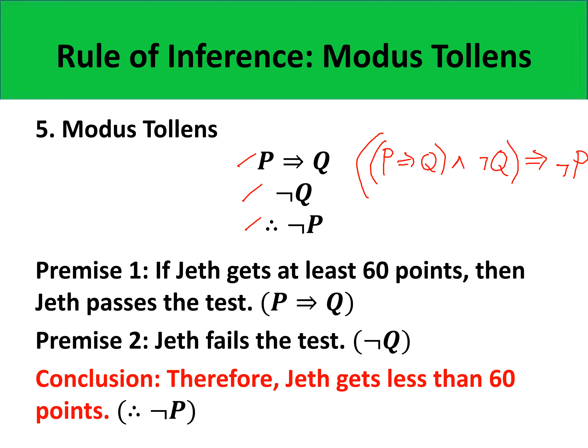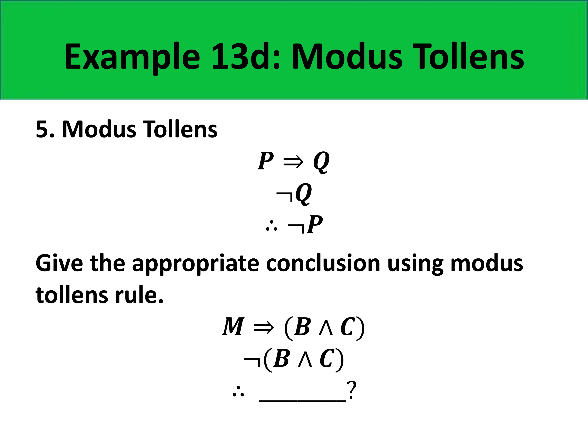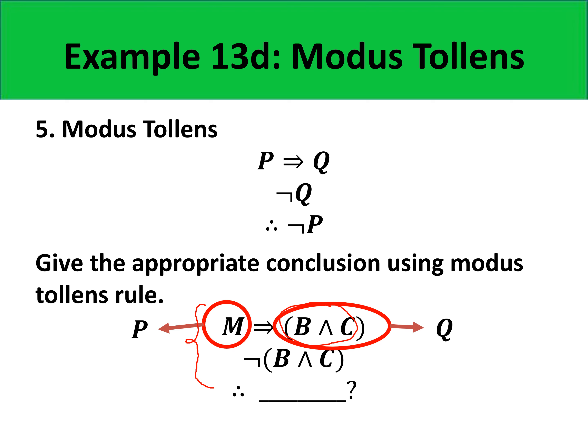Or: Jett gets less than 60 points. Now using modus tollens, let's identify the correct conclusion for the following argument. Here, M takes the role of P, and B and C takes the role of Q. The second premise is the negation of B and C, which is the negation of Q. Therefore, our conclusion by modus tollens must be negation of P, which in this case is negation of M.